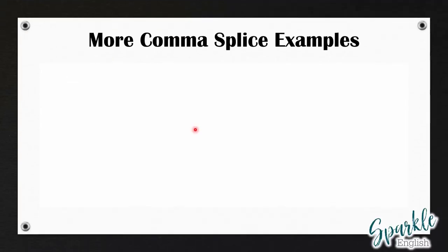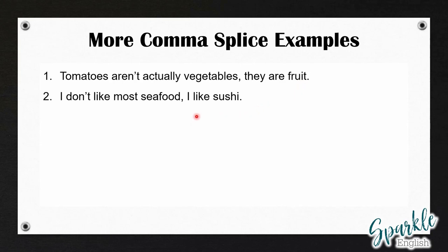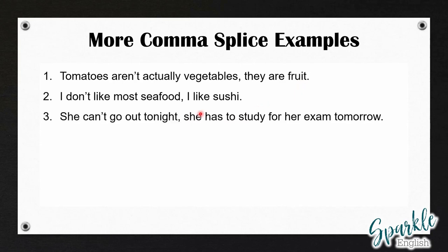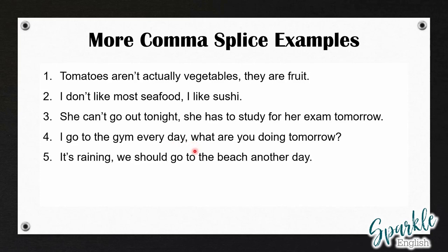So let's look at some more comma splice examples. 'Tomatoes aren't actually vegetables, they are fruit.' 'I don't like most seafood, I like sushi.' 'She can't go out tonight, she has to study for her exam tomorrow.' 'I go to the gym every day, what are you doing tomorrow?' 'It's raining, we should go to the beach another day.' We're going to use the methods we just learned to correct these comma splices.